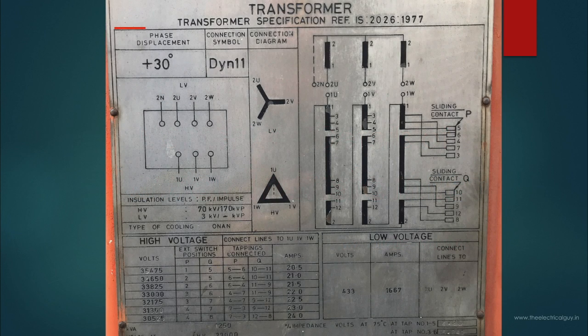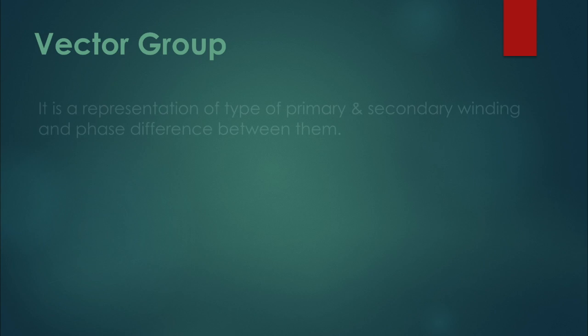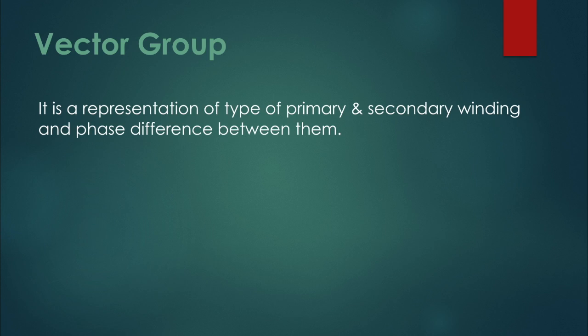So let's get started with the first parameter. Here you can see it is mentioned as connection symbol. It is also called as vector group. So let's understand what is vector group. It is a representation of type of primary and secondary winding and phase difference between them.